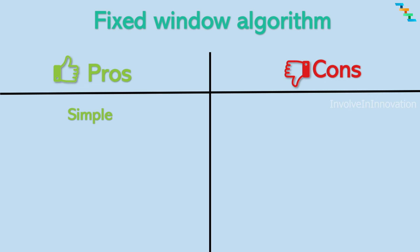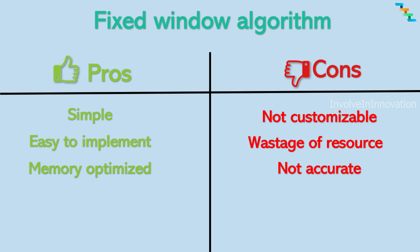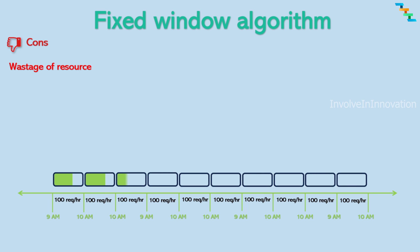The advantages of the fixed window algorithm are that it is straightforward to implement and understand, does not require complex data structures or algorithms, and requires only a simple counter to track requests per window, making it easy to implement and very memory efficient. The disadvantages are that it is not customizable to allow for burst traffic, may not effectively mitigate DoS attacks where malicious users intentionally flood the system — since the fixed rate limit may be easily exceeded — and this can result in service degradation or outage, and wastage of server computing resources if the request limit is reached well before the end of the window.